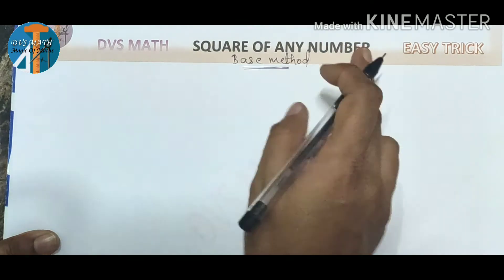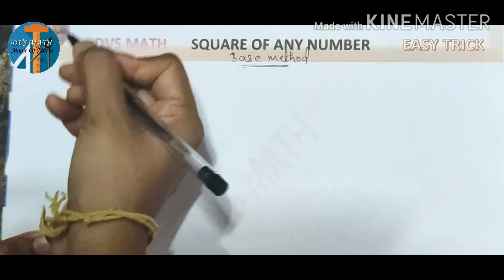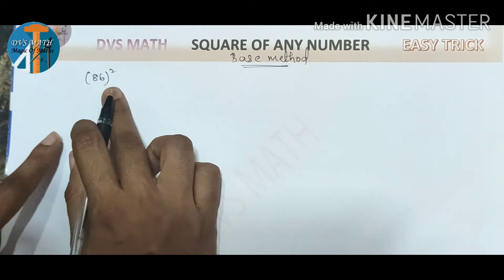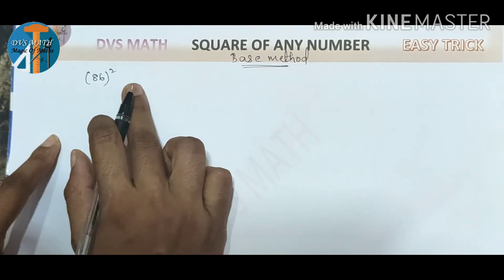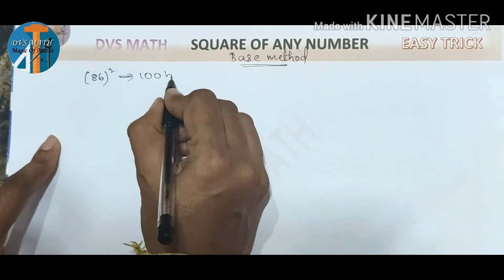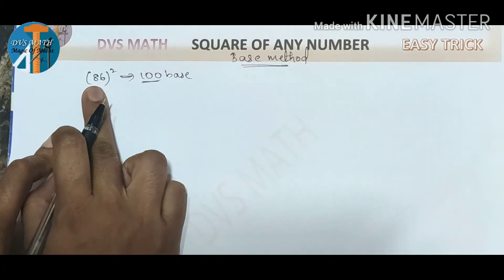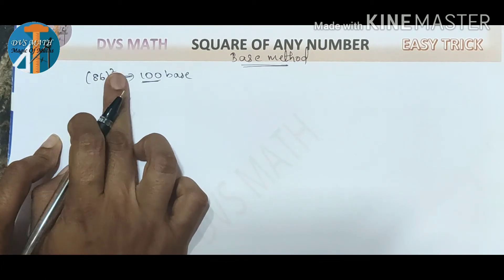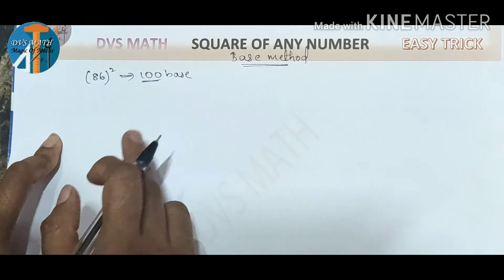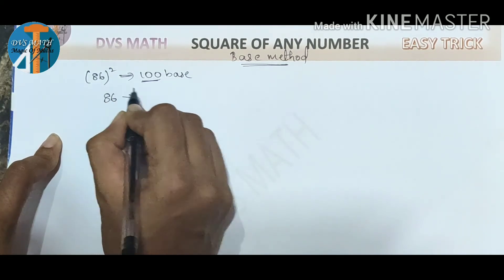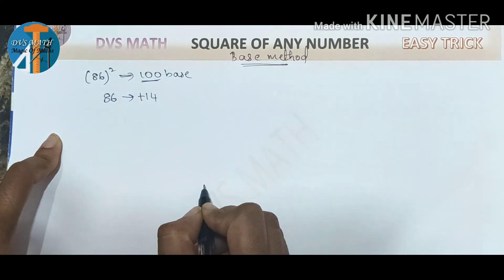How do you use this method? Squaring a number below 100 — I am using this number: 86 squared. This is the nearest number, plus or minus. The base is 100. So for 86 into 86: 8 squared is 64, 6 squared is 36. You can multiply. We add the number: 100 plus 14 — because 86 plus 14 equals 100.